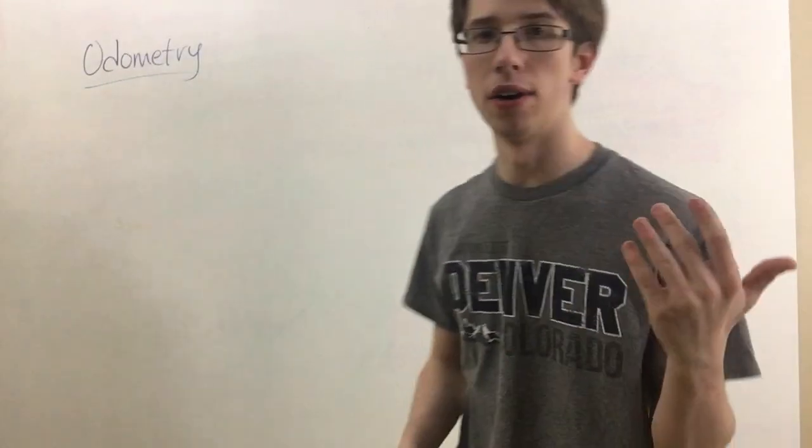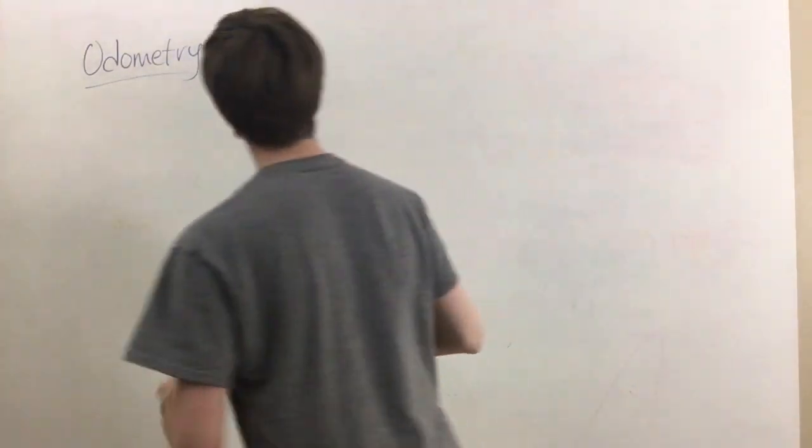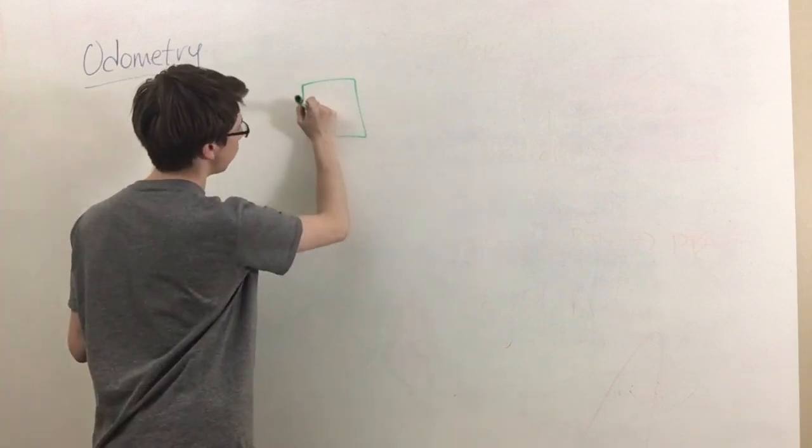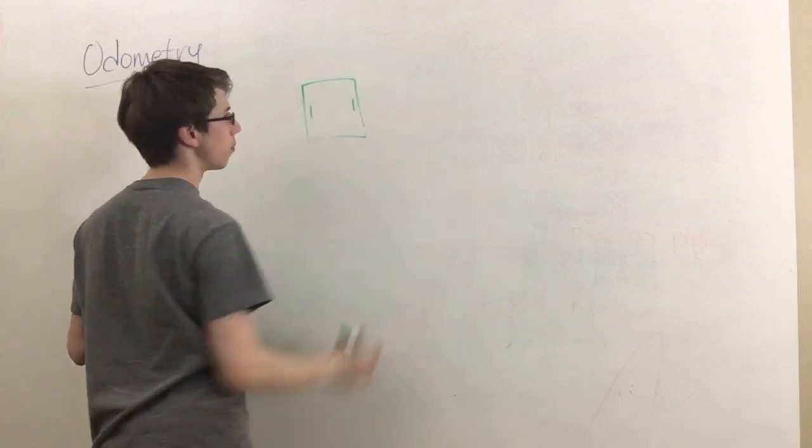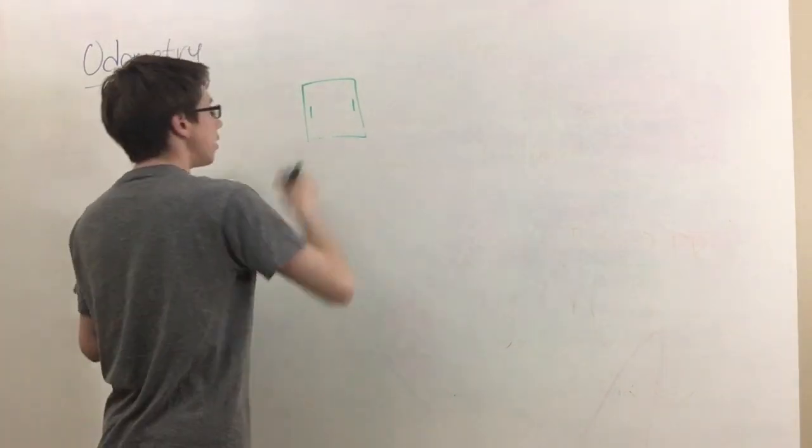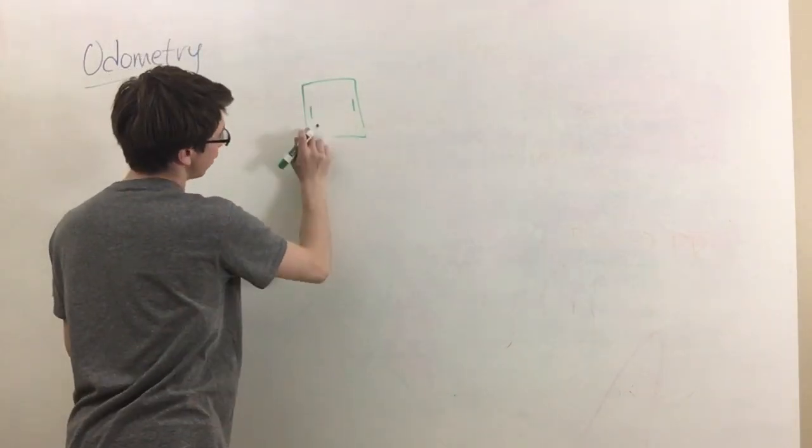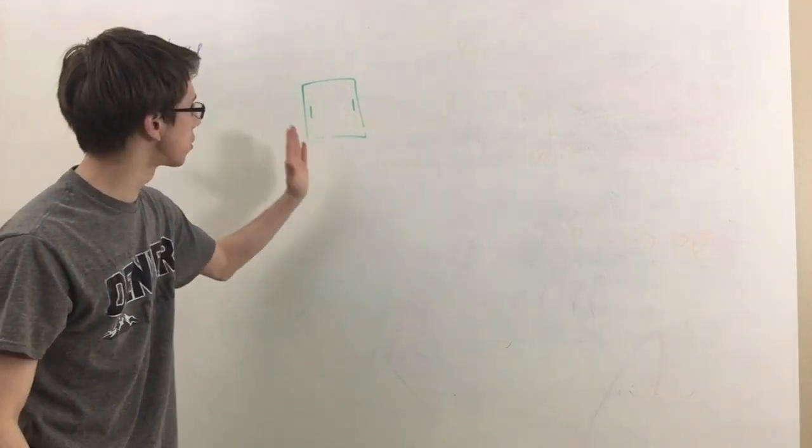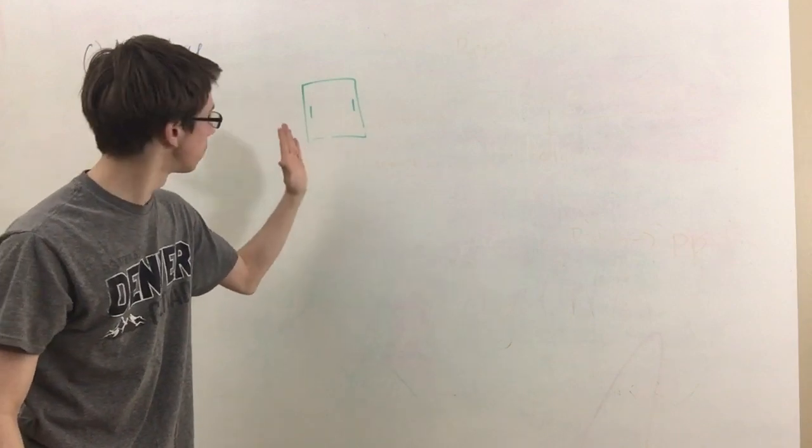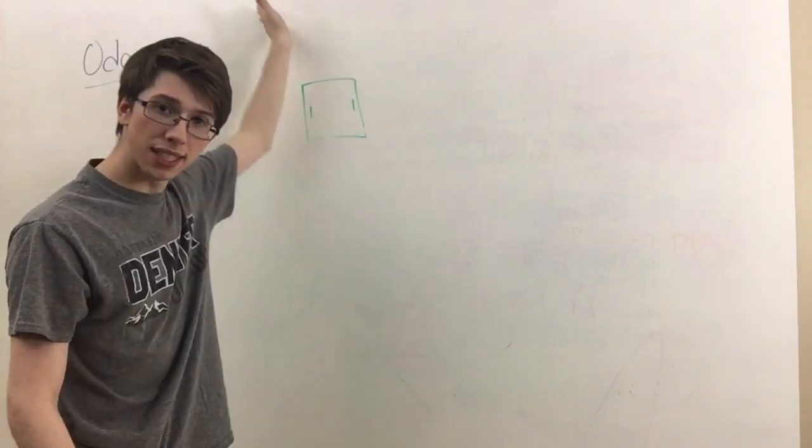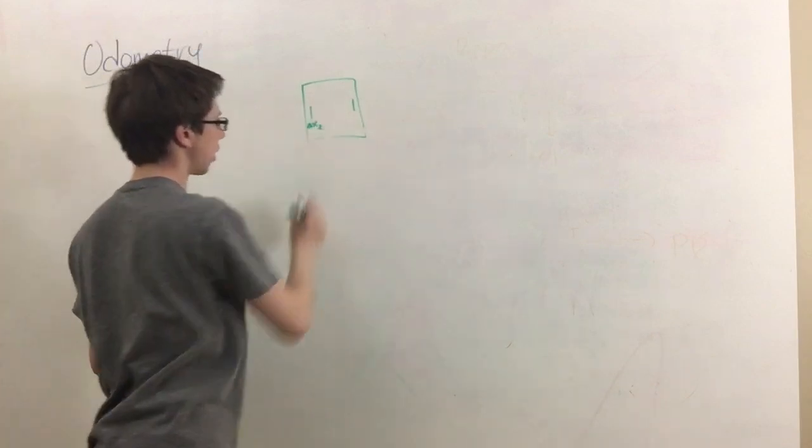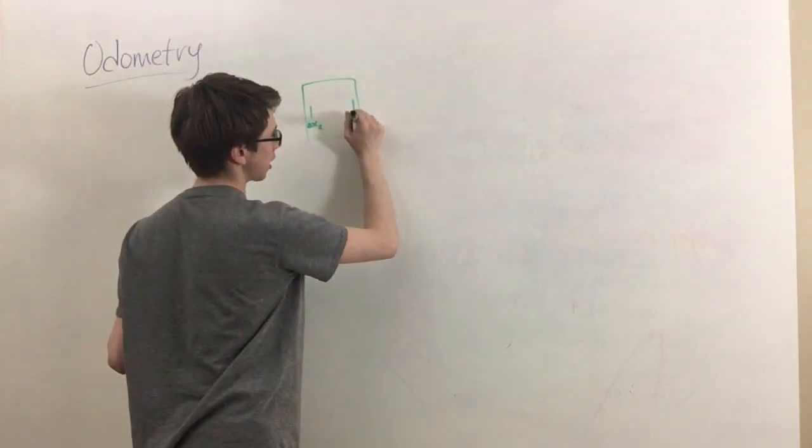Alright, let's get into the math. The first thing that we want to define are our variables. So let's define our first few variables as such: we have our robot like this, we have one wheel here and one dead wheel there. Now what we're measuring here is this is the left side of the robot, so the data returned by that odometer in the distance that has moved vertically will be represented using delta x sub l and this one will be represented delta x sub r.